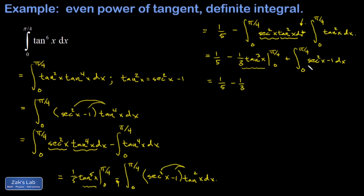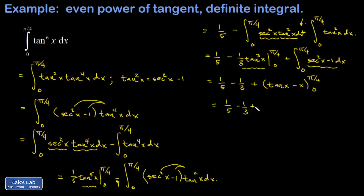In my second integral, each of these pieces is now a guessable antiderivative: sec²x integrates to tangent, and 1 integrates to x. When I look at the lower limit, that's tangent of 0 minus 0, which is just zero. When I plug in the upper limit I get tangent of π/4, which is 1, minus π/4.